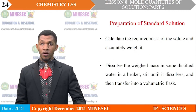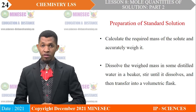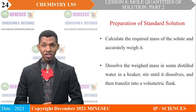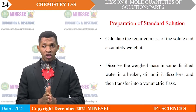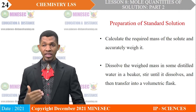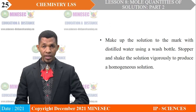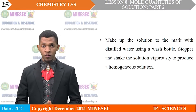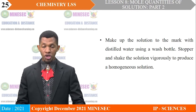Preparation of standard solutions: standard solutions can be prepared using the following steps. First, calculate the required mass of the solute and accurately weigh it. Second, dissolve the weighed mass in some distilled water in a beaker, stir until it dissolves, and then transfer into a volumetric flask. Third, make up the solution to the mark with distilled water using a wash bottle, stopper and shake vigorously to produce a homogeneous solution.